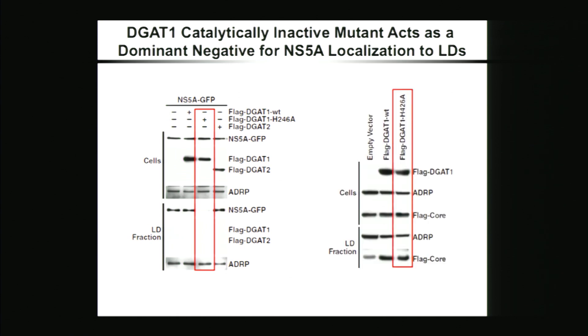Even more interesting, this mutant does not exhibit such a phenotype on core, which can still be found at the lipid droplets even when we overexpress the FLAG-DGAT1 mutant. So we decided to use this mutant to really pinpoint the role of this new interaction between NS5A and DGAT1 in HCV replication.